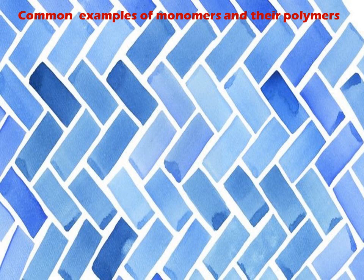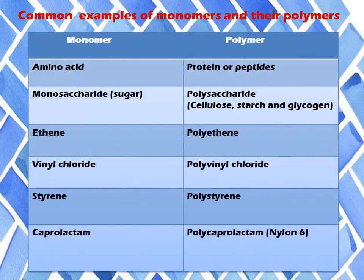Let us see some common examples of monomers and their polymers — you can note them in your notebook. Amino acid forms protein or peptides. Monosaccharide forms polysaccharide; examples include cellulose, starch, and glycogen. Ethene is a monomer that forms polyethene. Vinyl chloride forms polyvinyl chloride. Styrene forms polystyrene. Caprolactam forms polycaprolactam, a polymer also known as nylon 6.